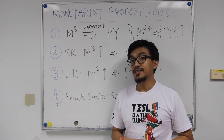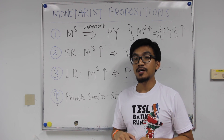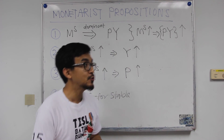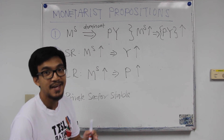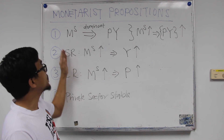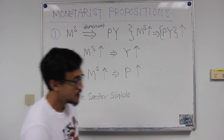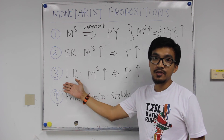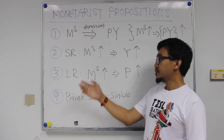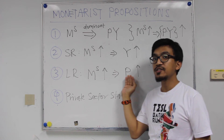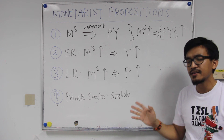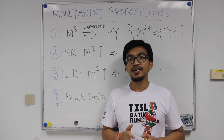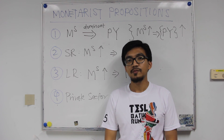To wrap up, these are the four propositions put forward by the monetarists. By now you should be able to argue and explain the first two propositions, which we have covered. In the next chapter, we will look at Proposition 3, which states that in the long run a change in money will only change nominal variables, while real variables like Y will not be affected. See you in the next video.